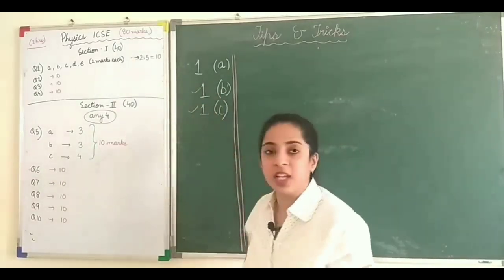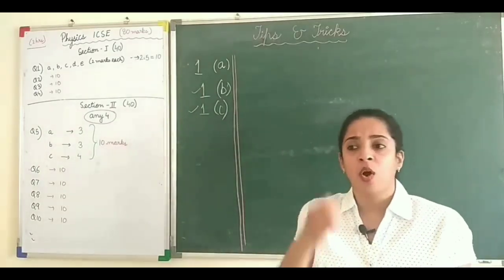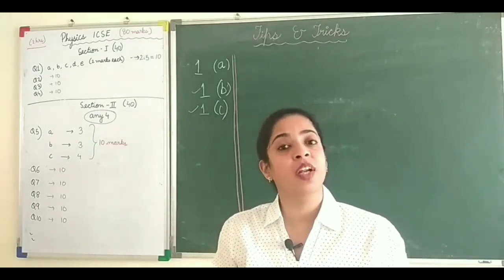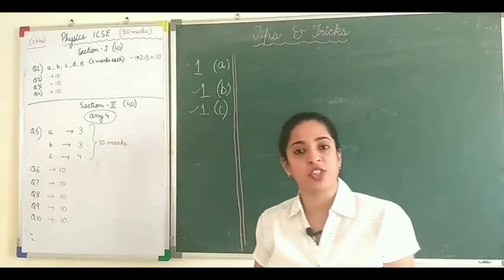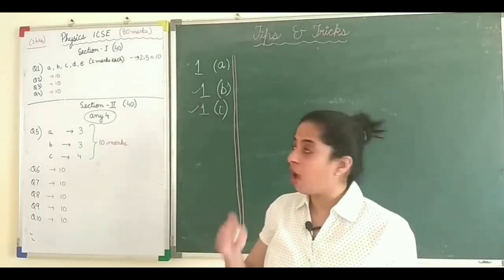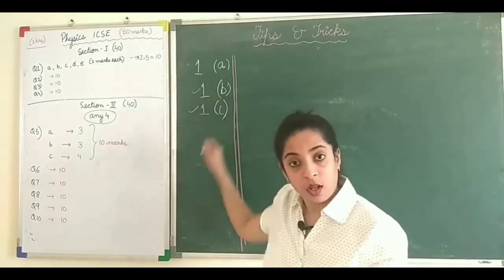So even if it is on the next page you will write one B. You will always write one C. So everywhere this number has to be repeated because many a times what you do, you staple it wrong or you change the order. At that time it becomes very difficult for the examiner to find out whether this B belongs to question number one or question number two or question number three. So everywhere you have to write one A, one B, one C.